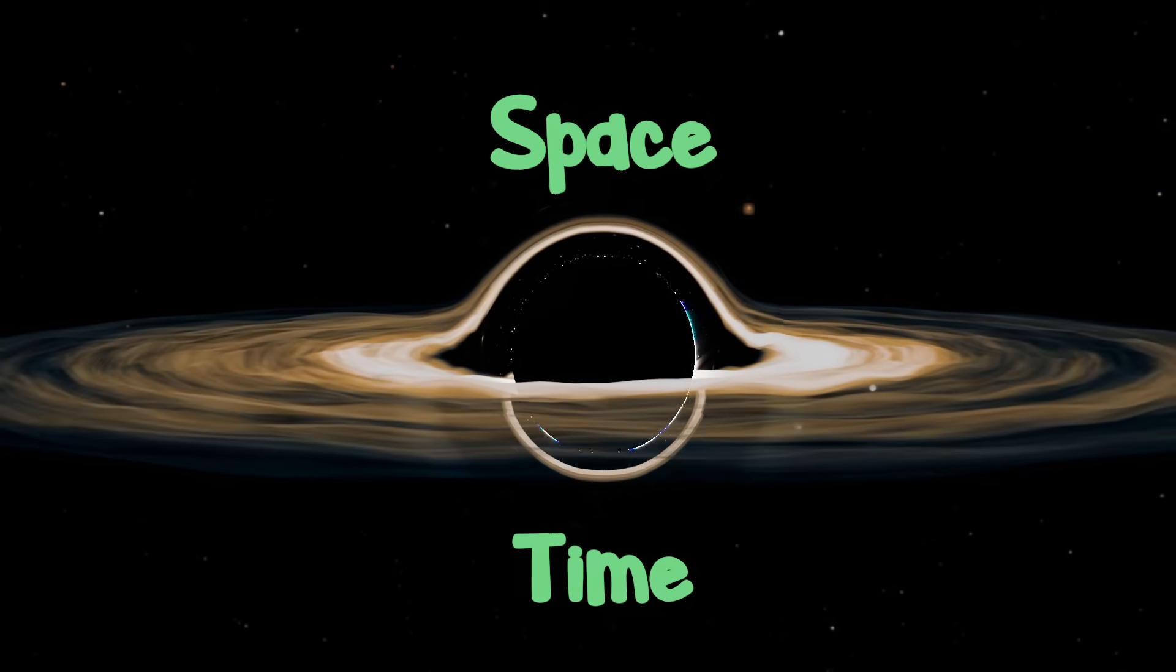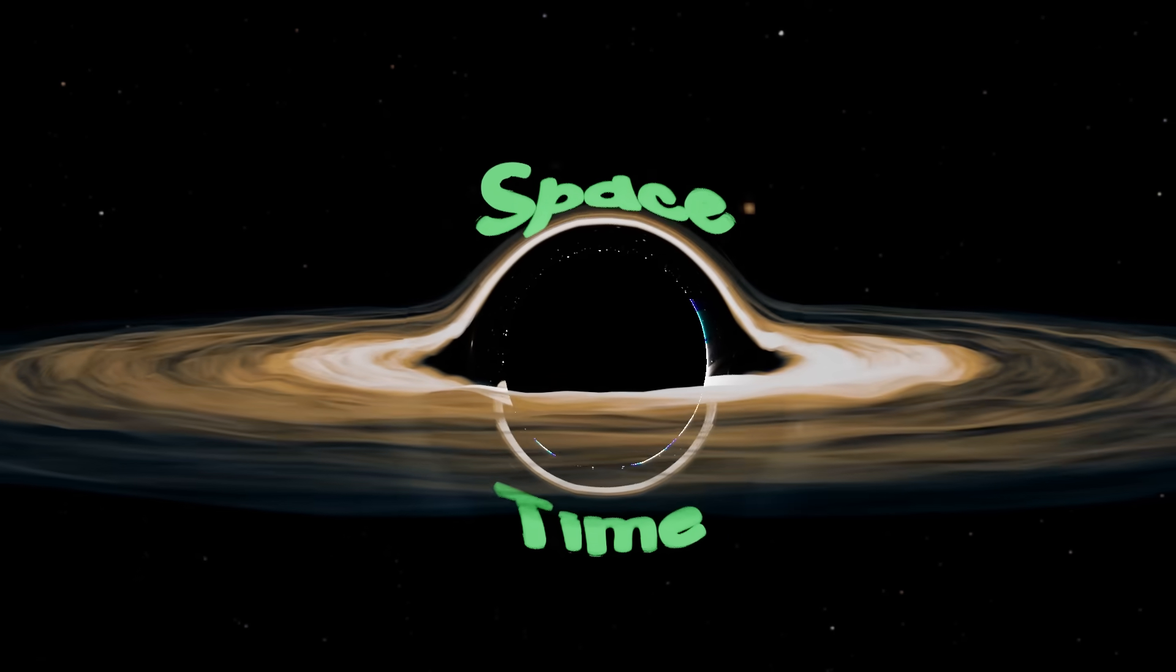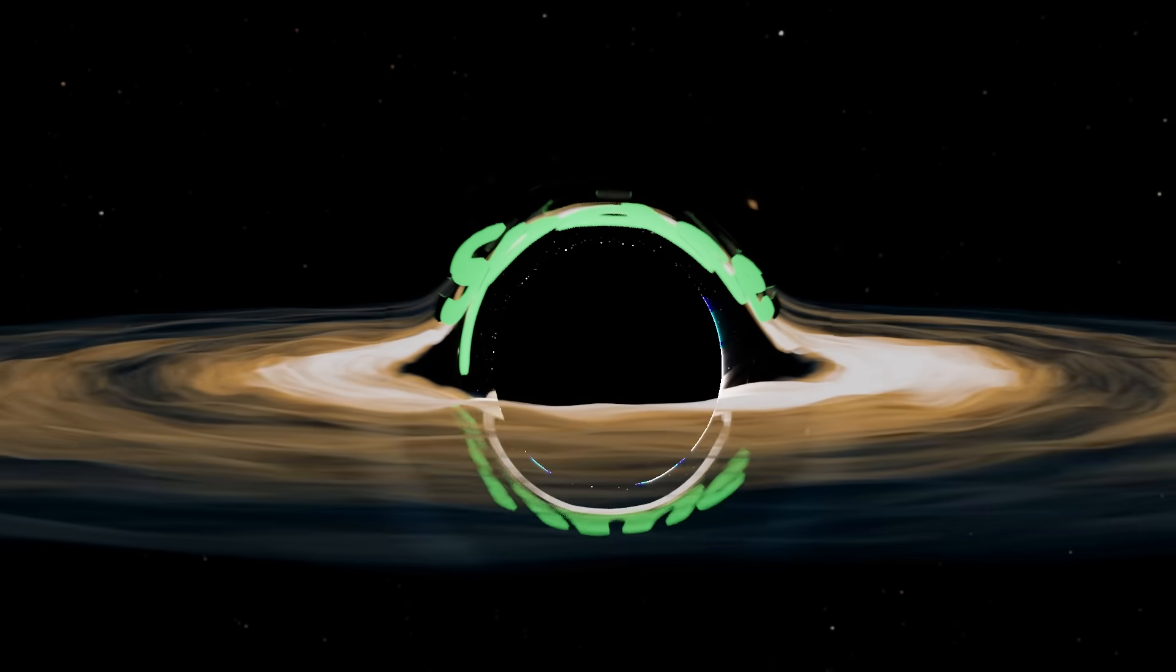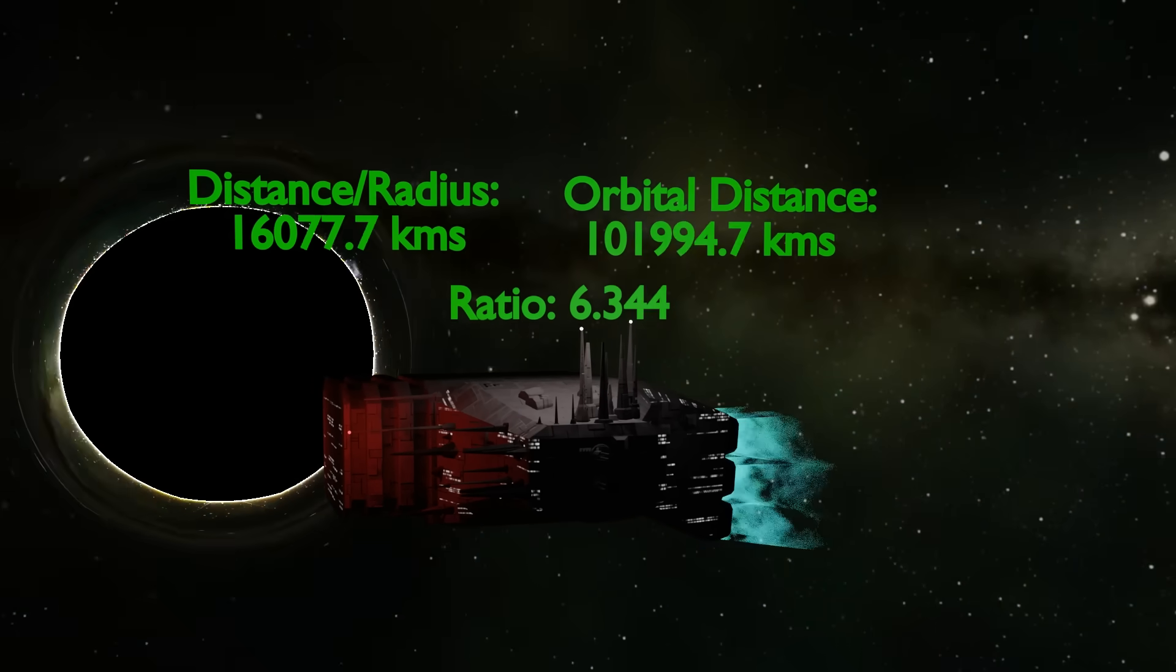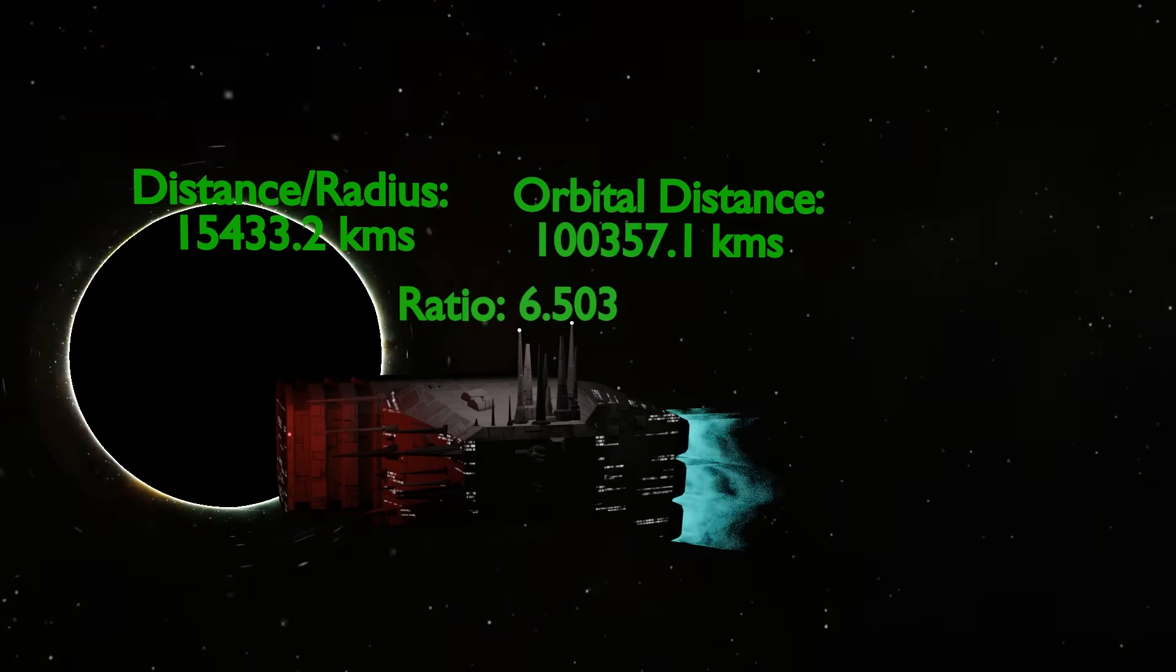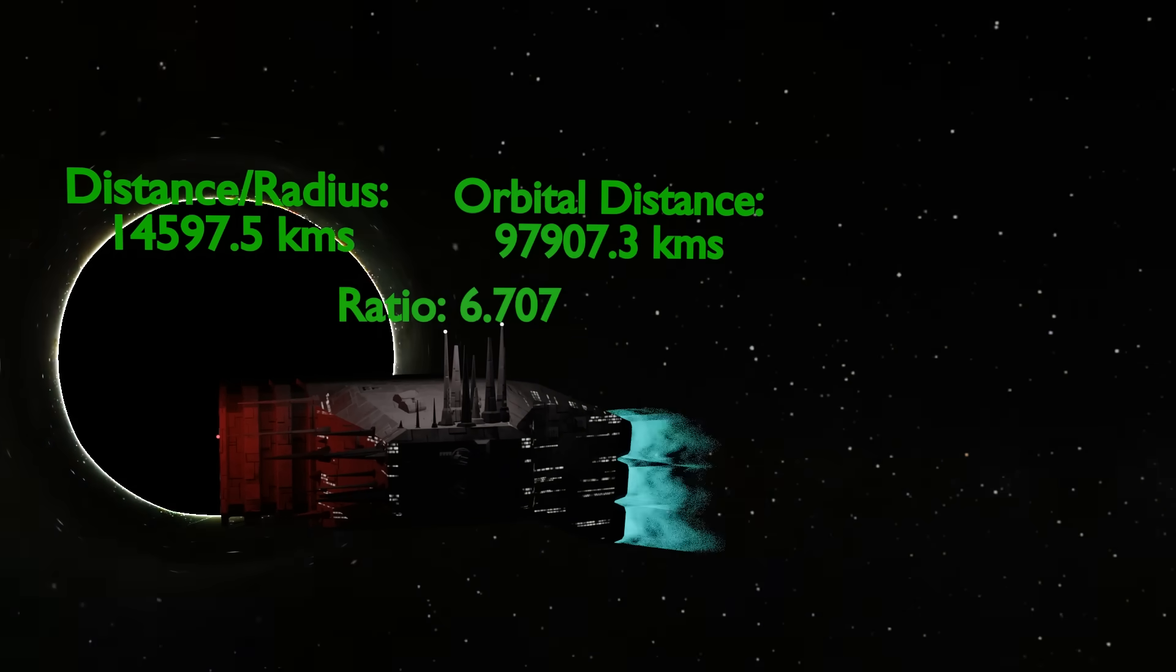Black holes warp space-time, meaning space-time near them is very much different from space-time near us. In the last video we saw that this means space behave very differently than what we expected. Now let's explore what this warpage means for time.